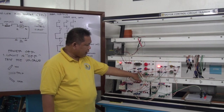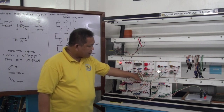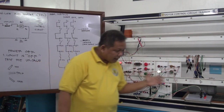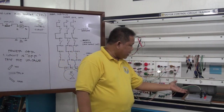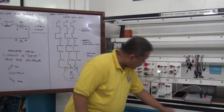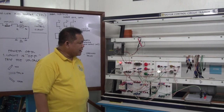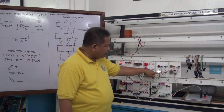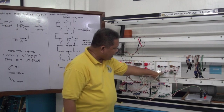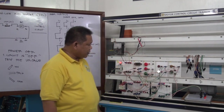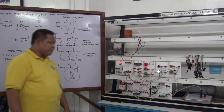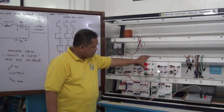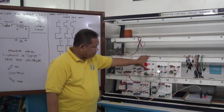We will press the start button. Now you will notice that the motor is running. It is running, and the run indicator lamp has also lit up. So if you want to stop the motor, just press the stop button.